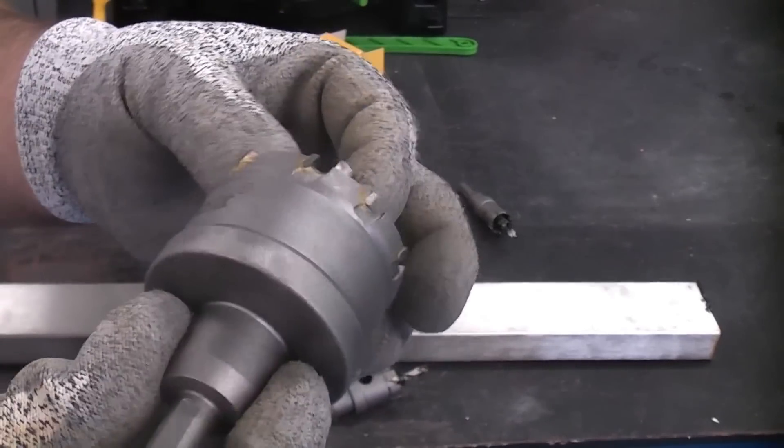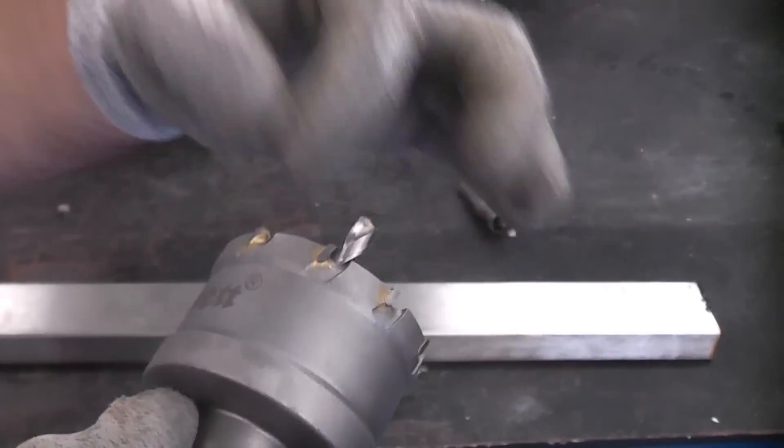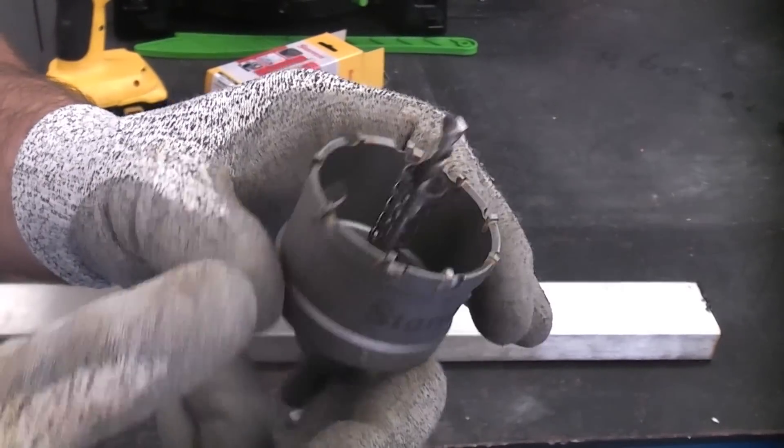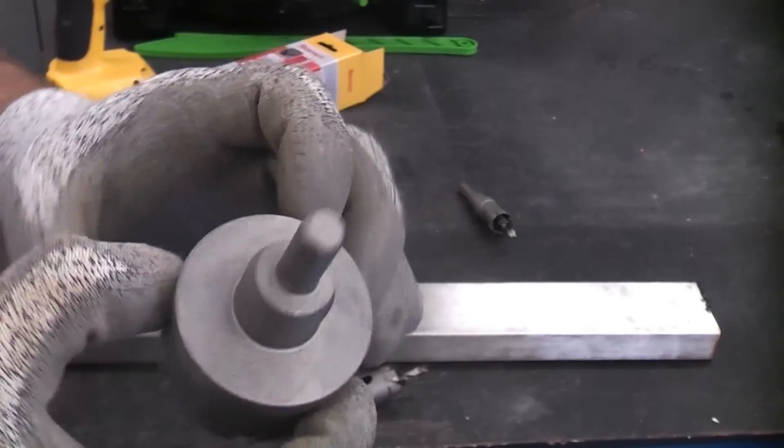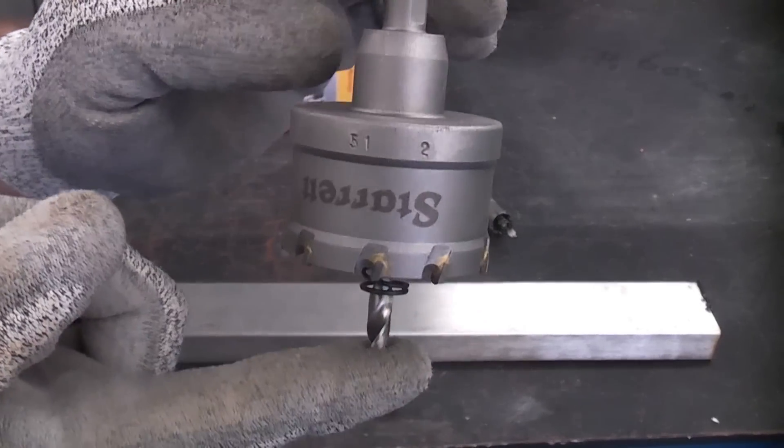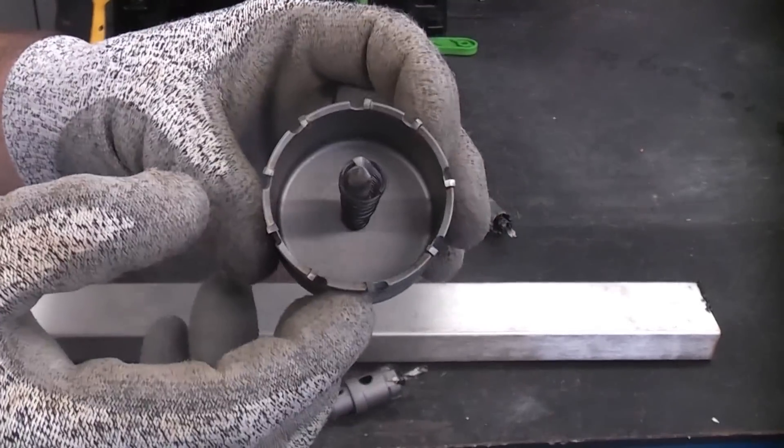The beauty of these is that once you've drilled your hole the spring in the center actually ejects the center piece, which with most hole saws actually gets stuck in the middle and you have to mess about removing it. So these are an incredibly good design and these are superb for stainless steel. You can actually cut stainless steel up to an inch thick using these hole saws.